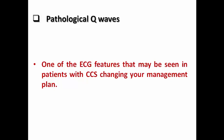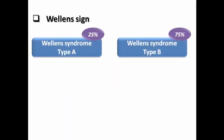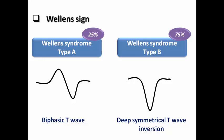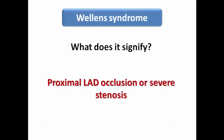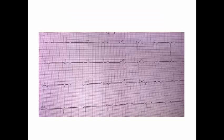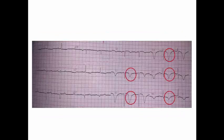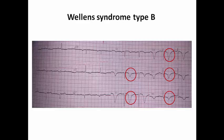Wellens syndrome is one of the famous ECG features that may have two subtypes: Wellens syndrome type A, which includes biphasic T waves occurring in 25% of cases, or Wellens syndrome type B, which shows deep symmetrical T wave inversion occurring in 75% of cases. Wellens syndrome signifies the presence of proximal LAD occlusion or severe stenosis. In this ECG we can see biphasic T waves from V1 to V4 suggesting Wellens type A, and in another ECG we can see deep symmetrical T wave inversion from V2 to V6 suggesting Wellens type B.